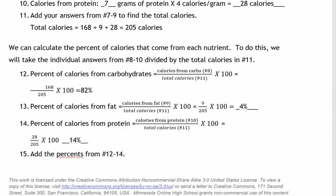Now we'll add these percents together. 82 plus 4 plus 14 equals 100. 100% of the calories come from carbohydrates, fat, or protein. You may want to use this video as an example as you work step by step through your assignment.